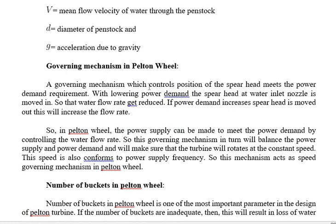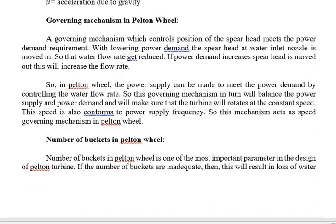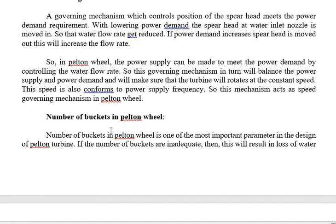The governing mechanism is controlled by the spear of the nozzle, which governs how much water flow is required. Moving the spear forward in the nozzle provides less fluid to strike the wheel. Moving the spear in the backward direction provides more water flow to strike the wheel for maximum power output.